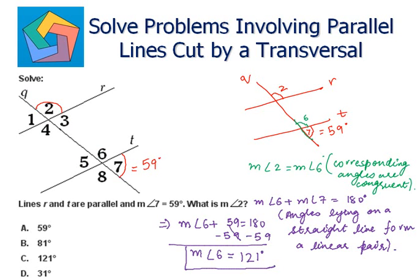So, since the measure of angle 2 is equal to the measure of angle 6, this implies the measure of angle 2 is equal to 121 degrees, which is the answer option in part C. We can highlight that.